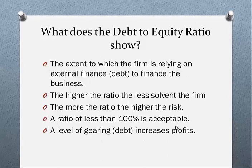One thing that must be noted, however, is that the level of gearing increases profits. So in one sense, having some level of debt is good. If you want to increase your business and borrow funds to buy a new machine that generates income, that increases your level of gearing but also increases profits. That's why a ratio of 100% is acceptable. Anything below is okay too, but we don't want a zero debt-to-equity ratio because we can get more out of our business.